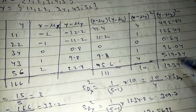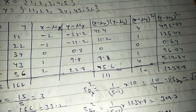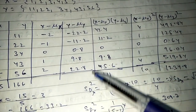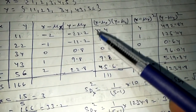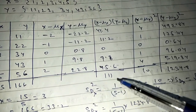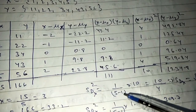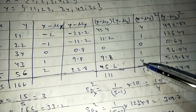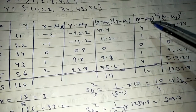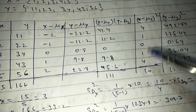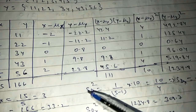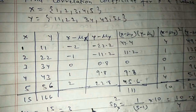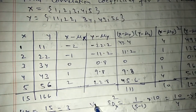After calculating all this, to find the standard deviation with 5 samples, divide by n minus 1, which is 4. The summation of (x minus μx) squared is 10. This value is also known as the variance for x.